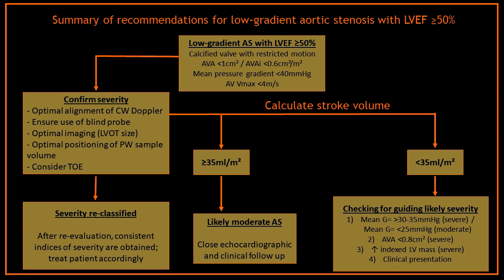However, if you have followed all these steps to confirm severity and you are still getting mixed parameters, the next step will be to calculate the stroke volume. If the stroke volume index by body surface area is more than 35 ml/m², the aortic stenosis is more likely to be moderate, and the patient should have close echocardiographic and clinical follow-up. But if the stroke volume index by body surface area is less than 35 ml/m², you need to check this guide for likely severity. If the mean gradient is more than 30–35 mmHg, the aortic stenosis is more likely to be severe.